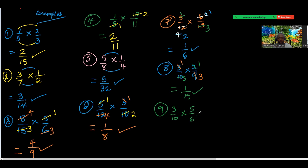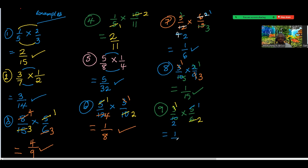6 and 3: 3 into 3 is 1, 3 into 6 is 2. Also 10 and 5: 5 into 5 is 1, 5 into 10 is 2. So 5 here gives 1 and 5 here gives 2. What do I have finally? 1 over 4. So we look at one more before I give you what to do.